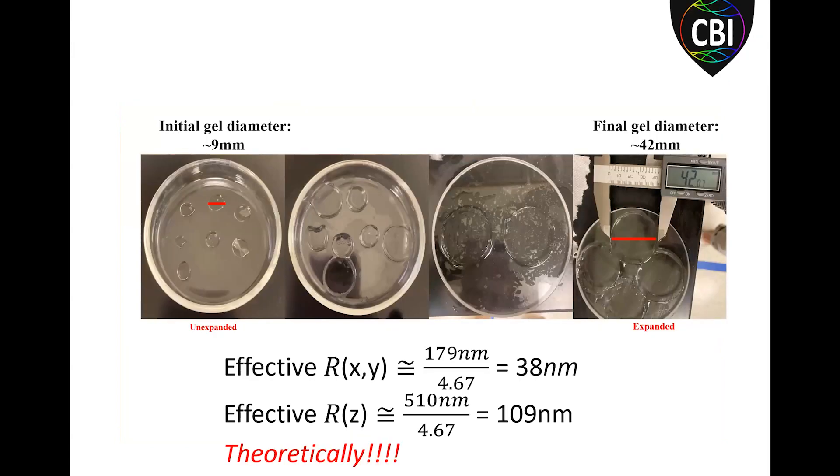So what does it actually look like? We had our initial diameter of nine millimeters. We do the digestion and repeated distilled water washes, and here have a final gel diameter of 42 millimeters. So using these rough numbers, we can say that there's a 4.67 fold increase in the sample. So you'd have an effective resolution of 38 nanometers in the XY and 109 nanometers in the Z. This is all theoretically with a perfect sample, plenty of signal. But unfortunately, that's not always the case.